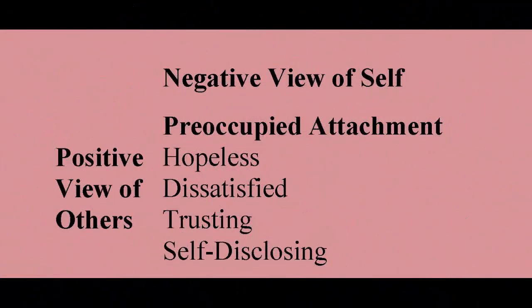The next type is preoccupied attachment. These individuals have a negative view of self and a positive view of others. They are hopeless and dissatisfied with who they are, but they're trusting and self-disclosing toward others. They're not comfortable in their own skin and prefer to connect with others to feel better. These are folks who are always trying to have those relationships and connections because they feel it will help resolve their internal issues.